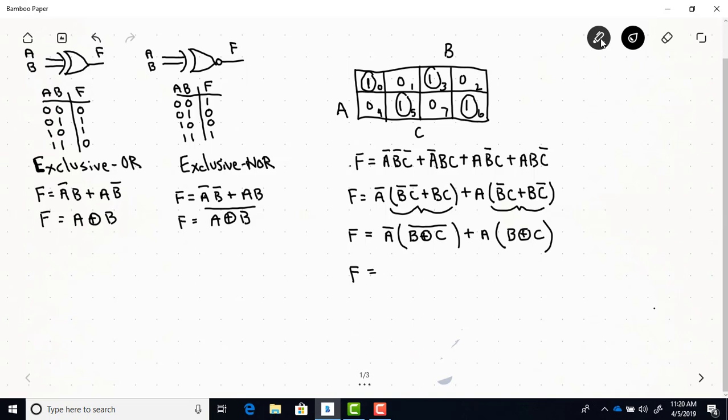So variable A with B exclusive ORed with C, well this is an exclusive NOR. So the final answer here is the exclusive NOR of A exclusive ORed with B, exclusive ORed with C.